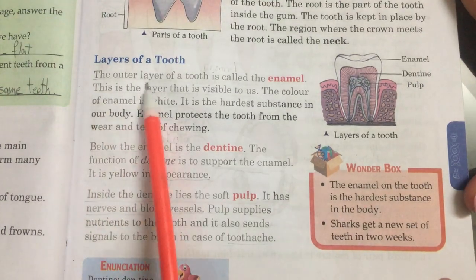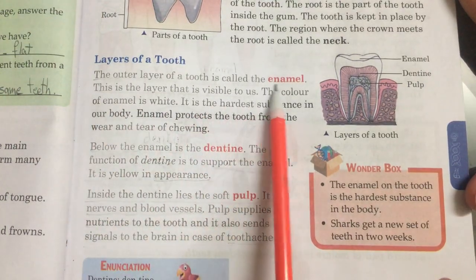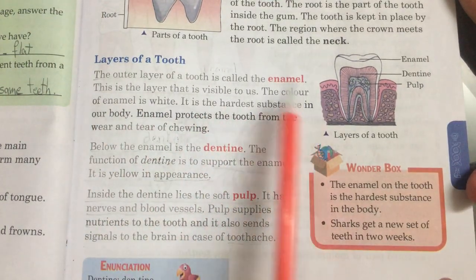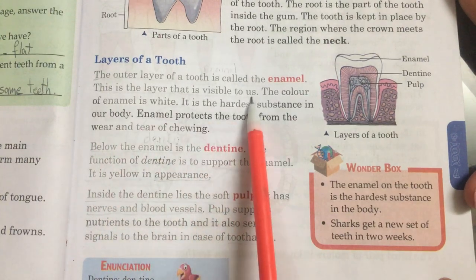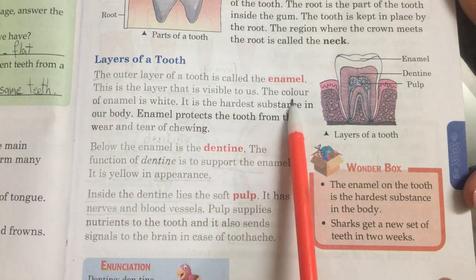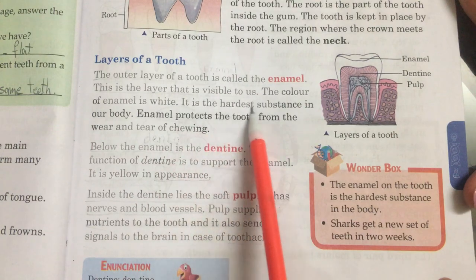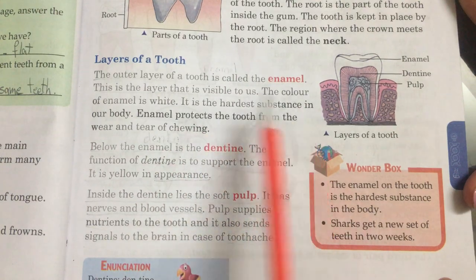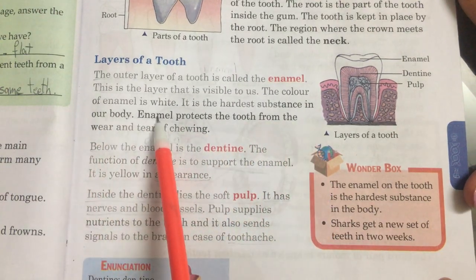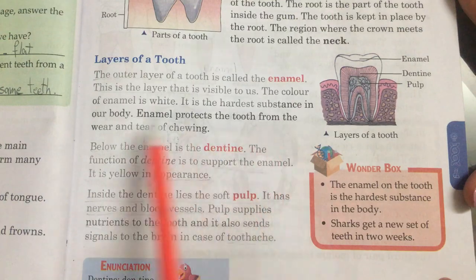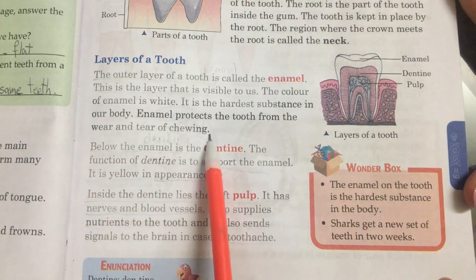The outer layer of a tooth is called the enamel. This is the layer that is visible to us. The color of enamel is white. It is the hardest substance in our body. Enamel protects the tooth from the wear and tear of chewing.